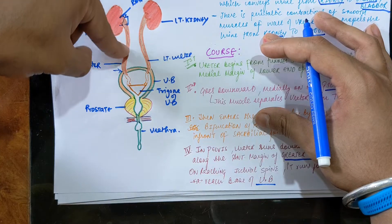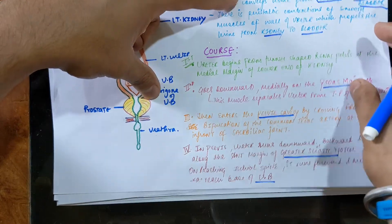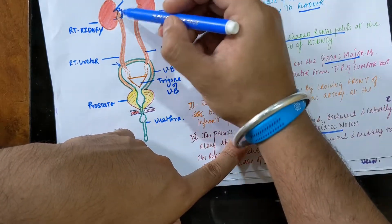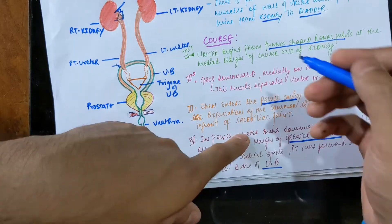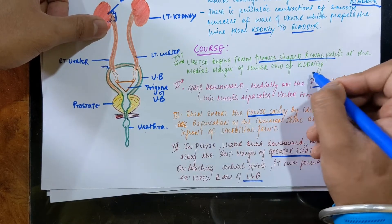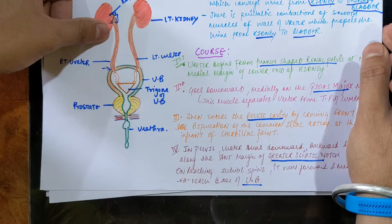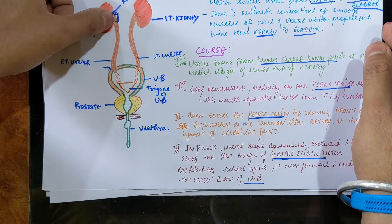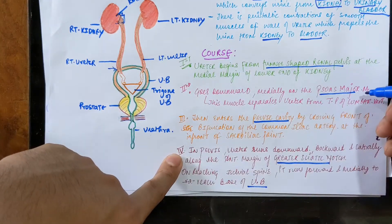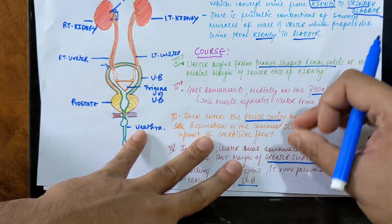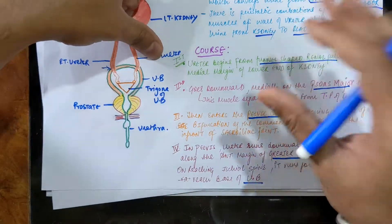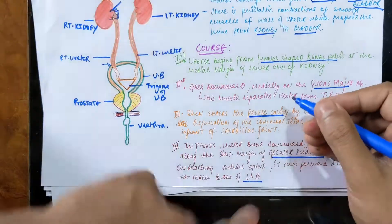Now let's see the course — how the ureter progresses downward towards the urinary bladder. First, the ureter begins from the funnel-shaped renal pelvis. You can see the funnel shape; it begins from the medial margin of the lower end of the kidney. I'll be discussing this theoretical part on a separate diagram — this is a basic diagram and I'm just relating it here.